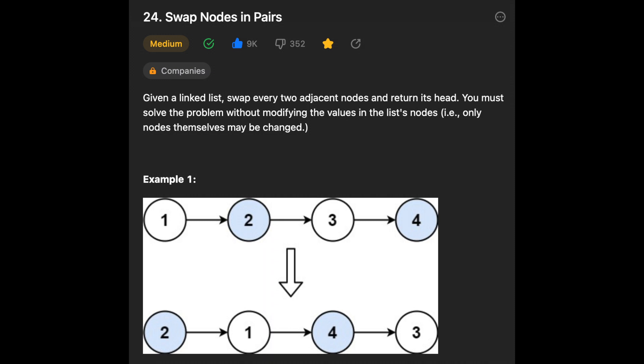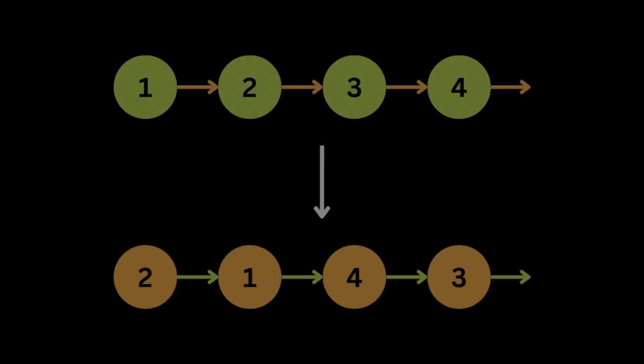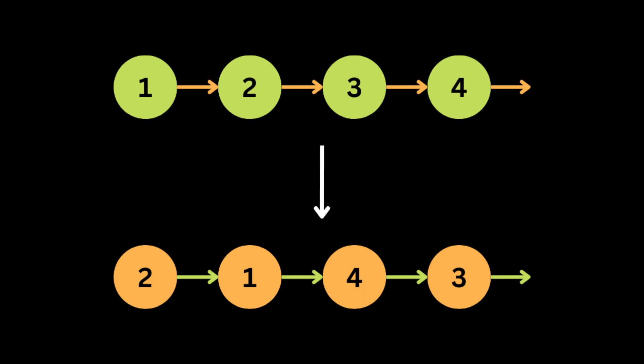In this video I will show you how to solve LeetCode 24, Swap Nodes in Pairs. They give us a linked list — a data structure with nodes where each node has a value and a reference to the next node. We need to swap every two adjacent nodes without modifying the values. For example, given this input linked list, the result should look like that.